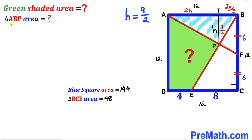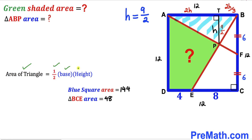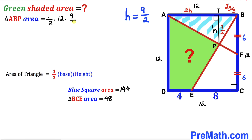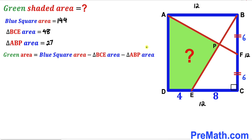Now we can calculate the area of triangle ABP. Using area equals one-half times base times height: the base is 12 and the height is 9/2, so the area of triangle ABP is one-half times 12 times 9/2, which simplifies to 27 square units.